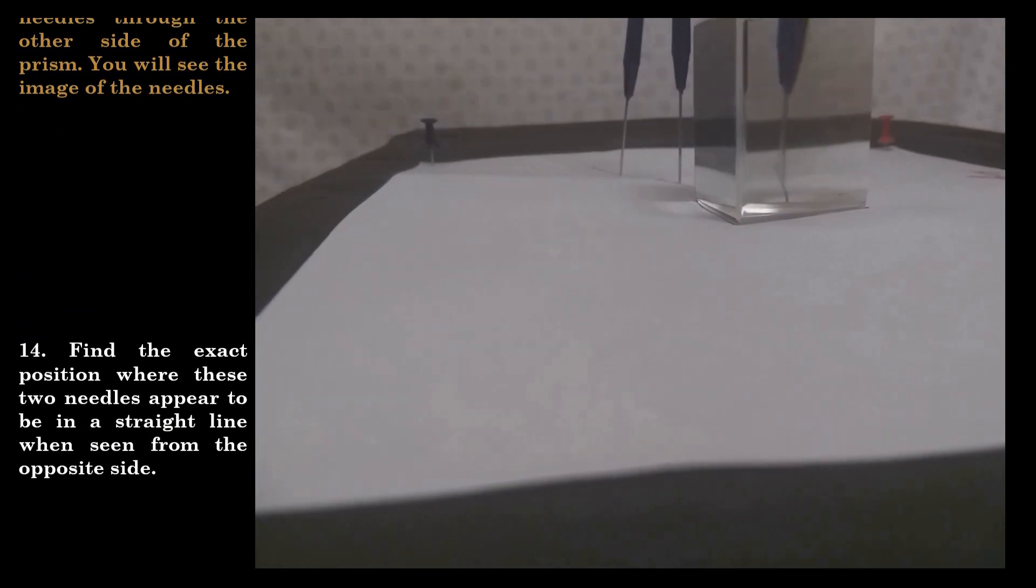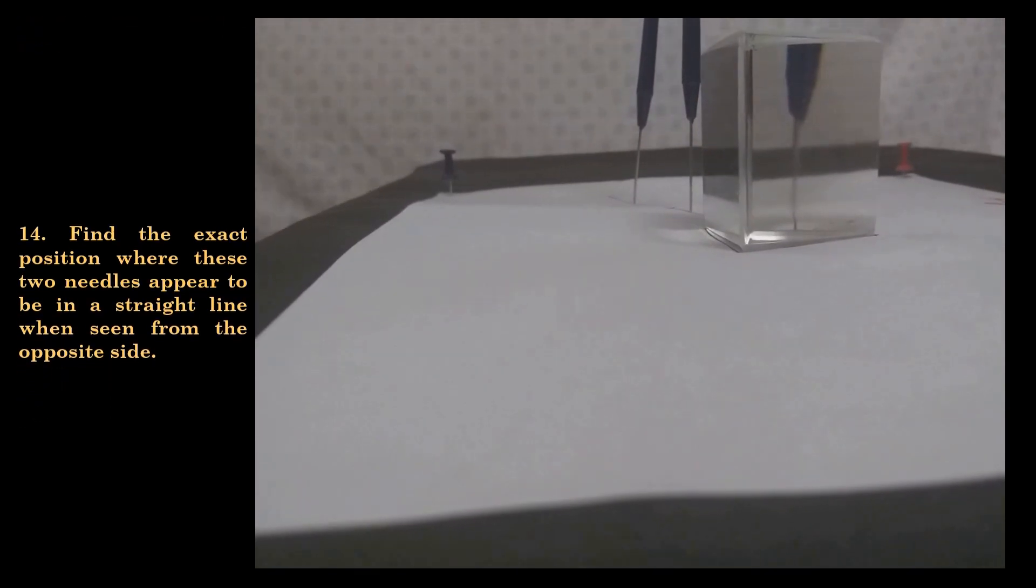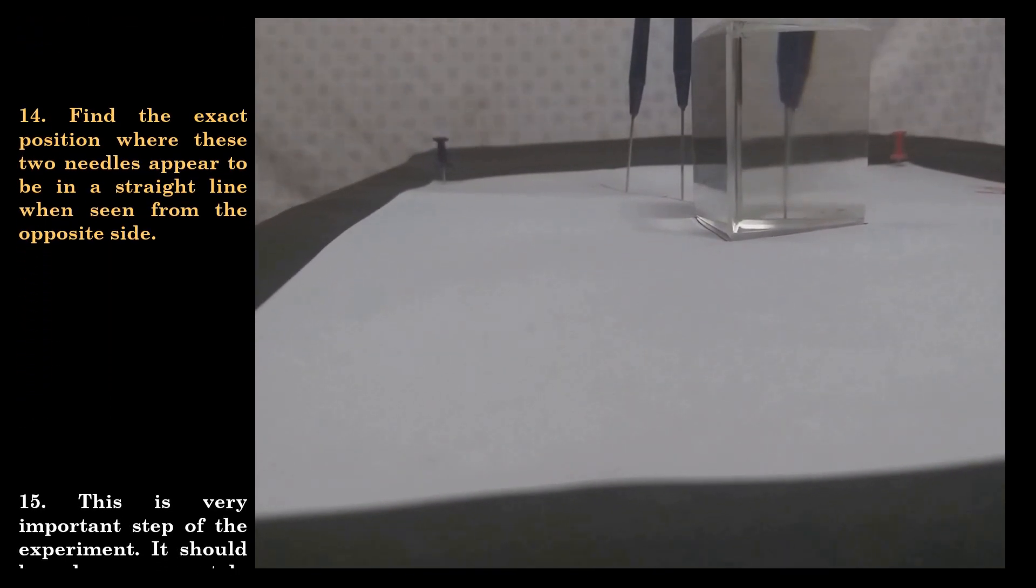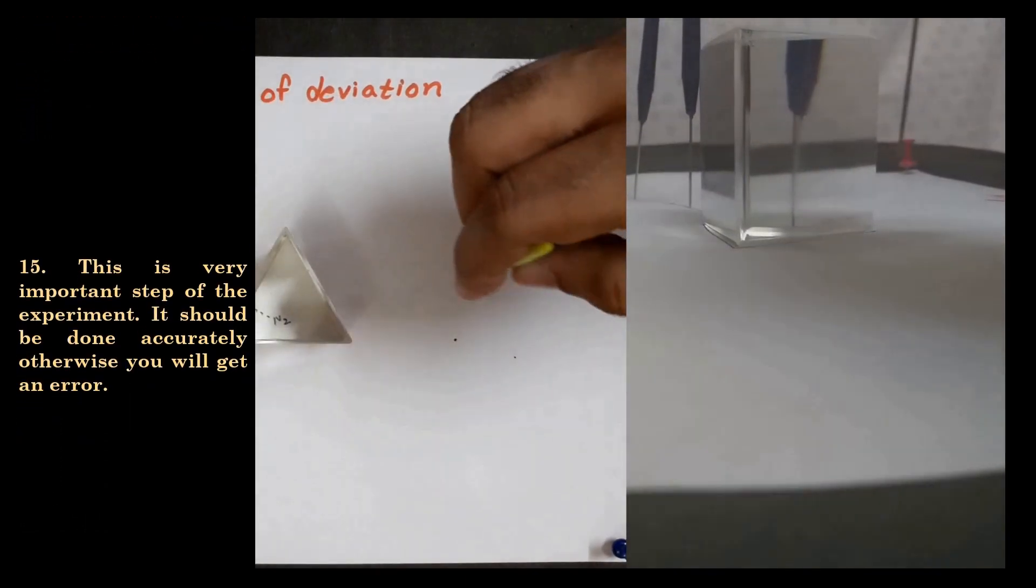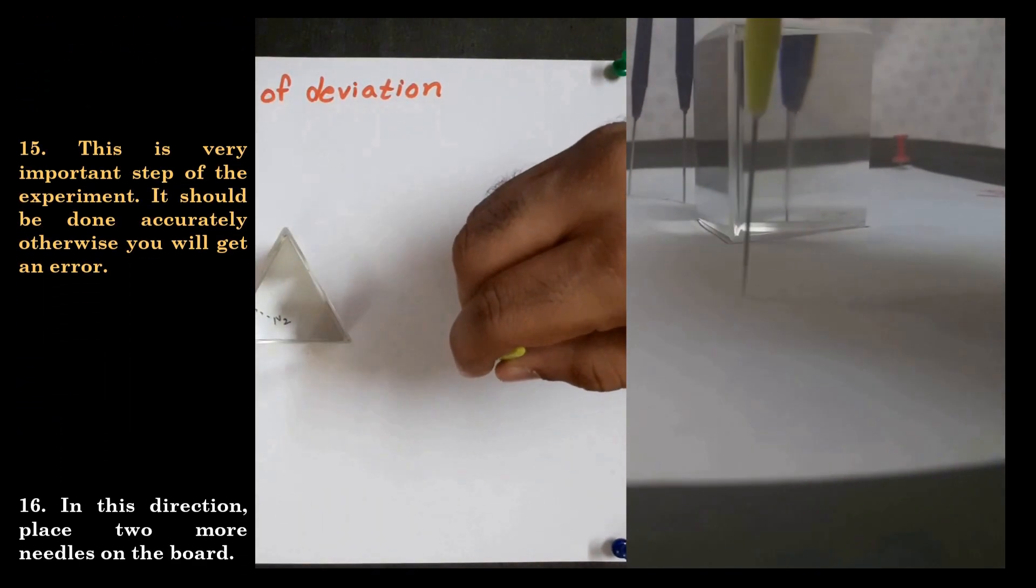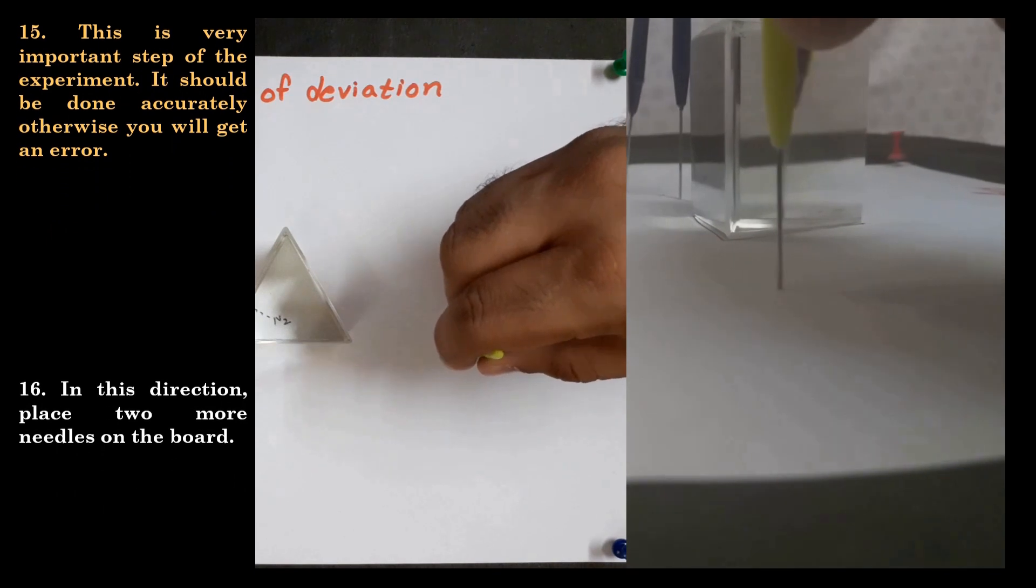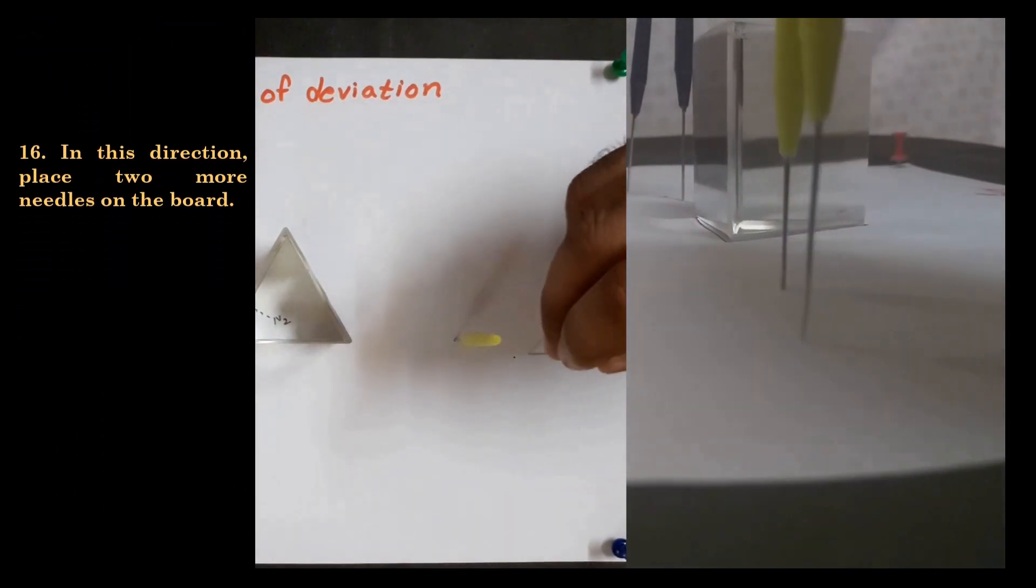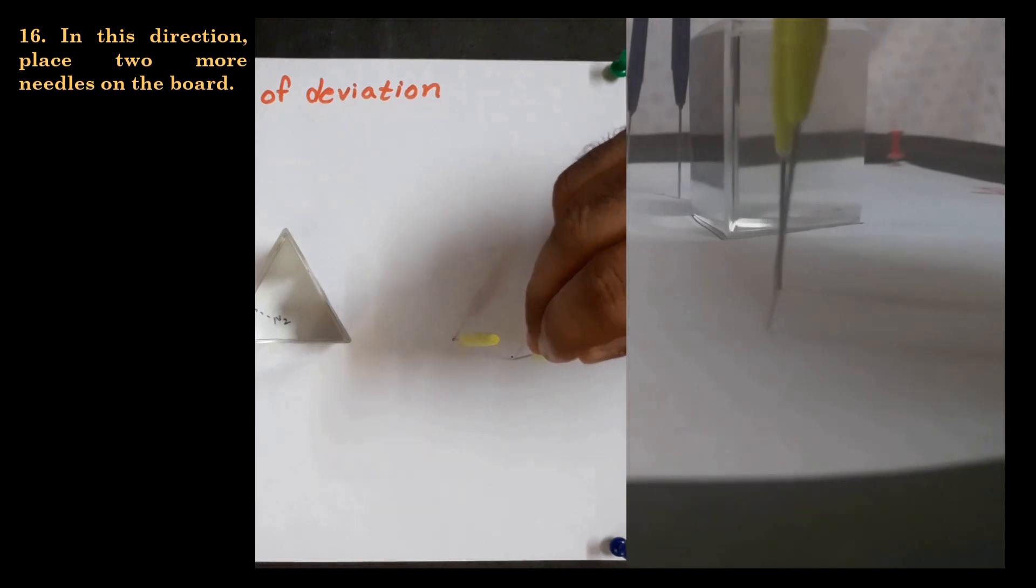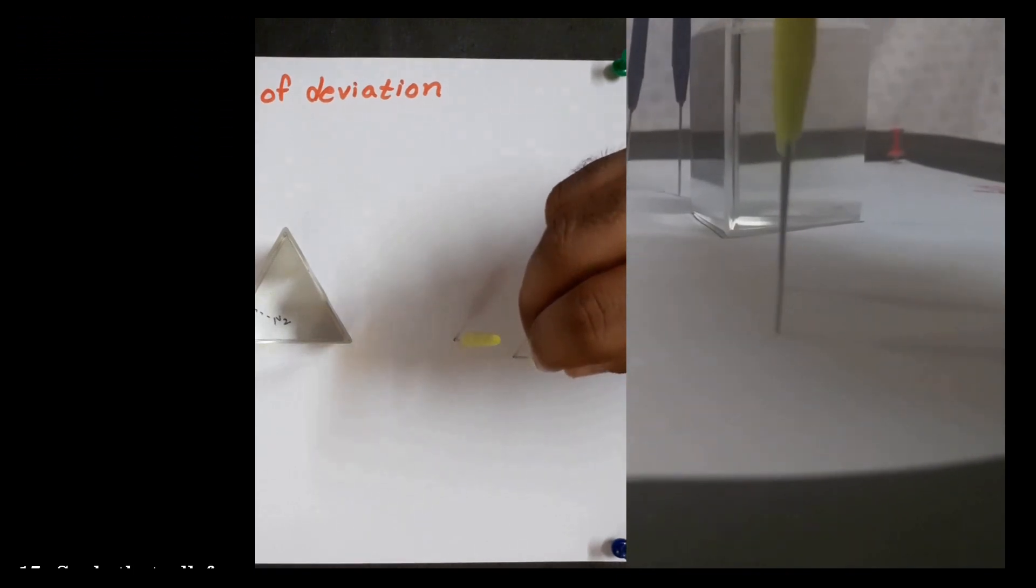Now you have to find the exact position where these two needles appear to be in a straight line when seen from the opposite side of the prism. Friends, this is a very important step of the experiment. It should be done accurately, otherwise you will get an error. In this direction, place two more needles on the board.